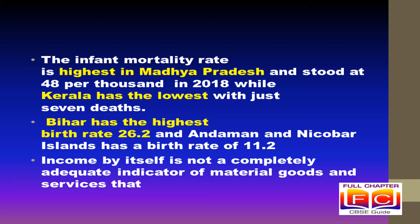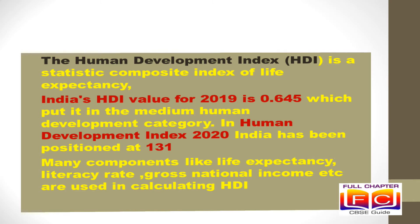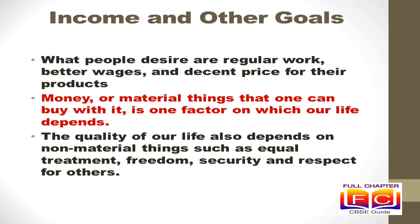Countries with per capita income of US dollar 12,056 and above per annum in 2017 are called rich countries, whereas countries with per capita income of US dollar 955 or less are called low income countries. India comes in the category of low middle income countries. Besides size of per capita income, not only per capita income but also homogeneity or equity of performance should be reflected while comparing two or more societies. If a society has higher per capita income but much of its income is with a small group, then it cannot reflect the development of the society.